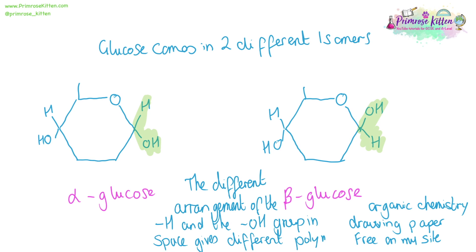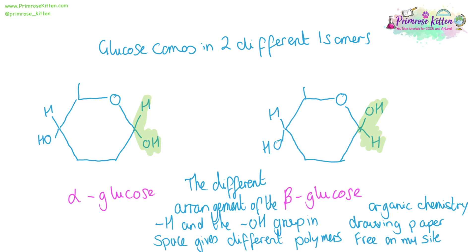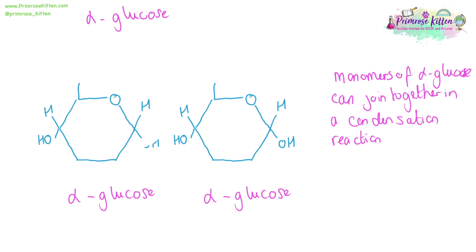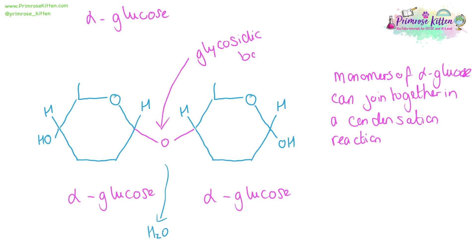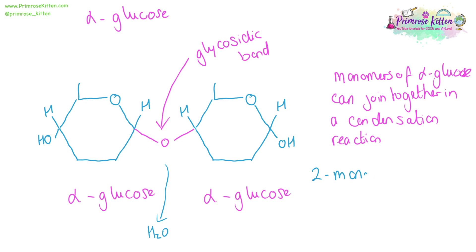This different arrangement in space — the different positioning of that hydrogen and the OH group — will give rise to different polymers of alpha and beta-glucose. Here we have two monomers of alpha-glucose. When these join together in a condensation reaction, water will be lost. The bond in the middle will be a glycosidic bond, joining the two monomers of alpha-glucose together.